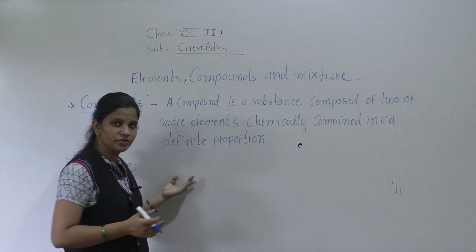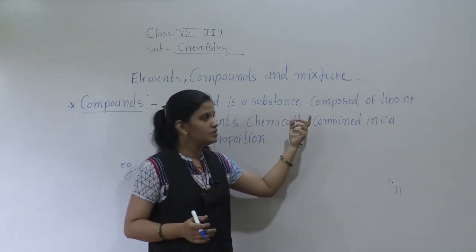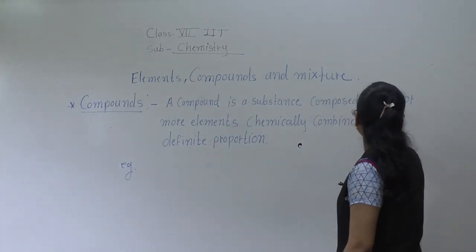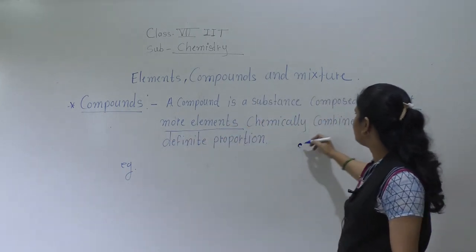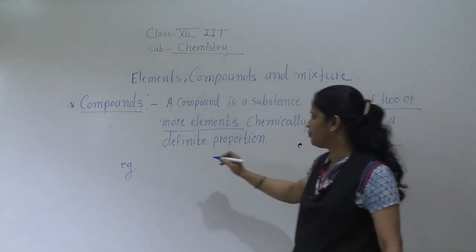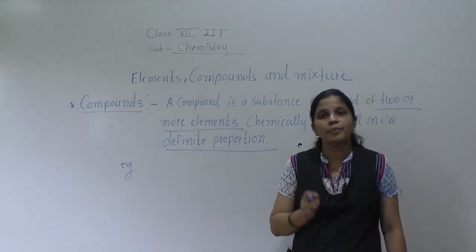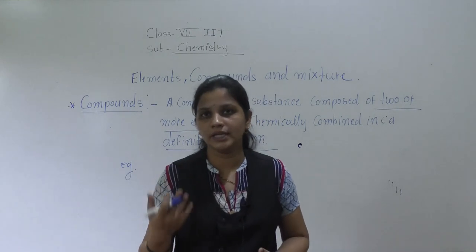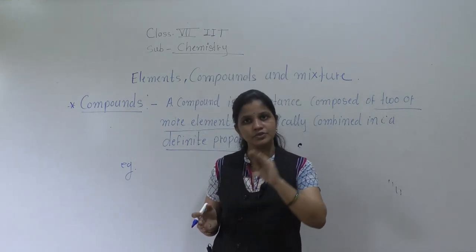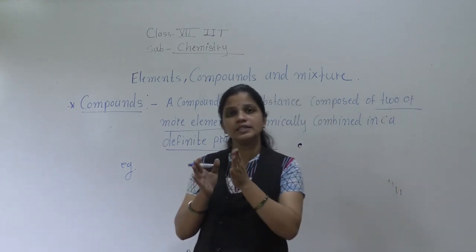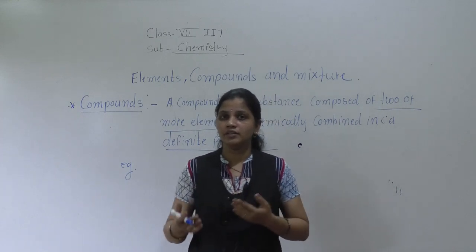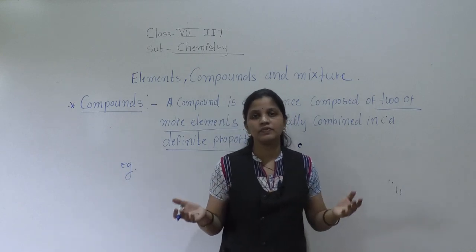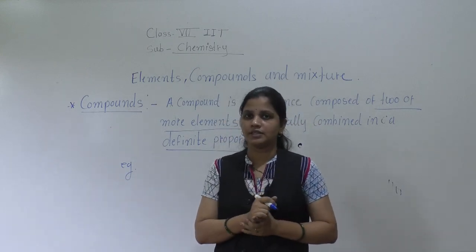The definition is: a compound is a substance composed of two or more elements. This is very important — two or more elements chemically combined in a definite proportion. So compound means it is the combination of two or more elements. In elements we saw atoms of the same kind, only a single element. But in a compound, there is a combination of more than one element. So two or more elements when chemically combined together, it is known as a compound.